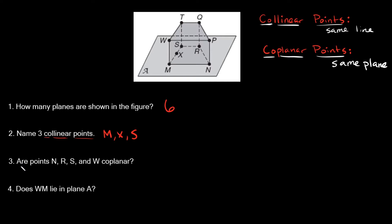Number three asks: are points N, R, S, and W coplanar? N, R, and S are all on the bottom side of the box. But W is up at the top corner of the box. So W is not on the same plane as N, R, and S. Therefore, are points N, R, S, and W coplanar? No, they are not.